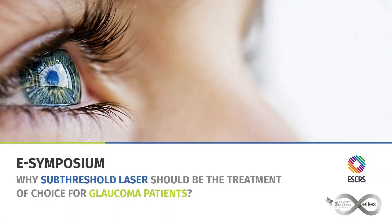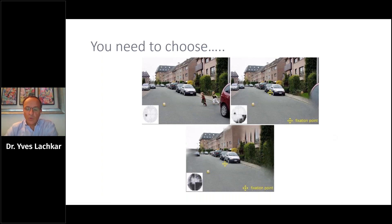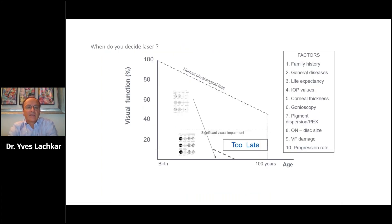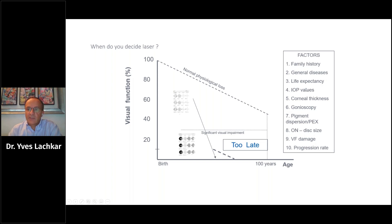We are going to summarize this about laser and laser surgery. The main problem is choosing the treatment of glaucoma and deciding when to do laser. There are many parameters to consider: family history, general disease, life expectancy, IOP values, corneal thickness, gonioscopy, pigment dispersion, exfoliation, optic nerve disc size, visual field damage, and progression rate.